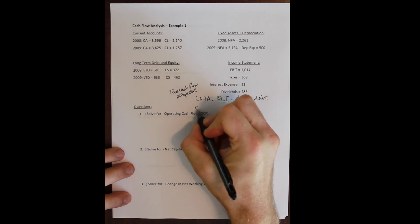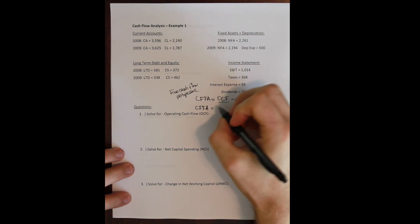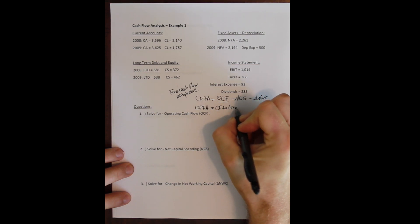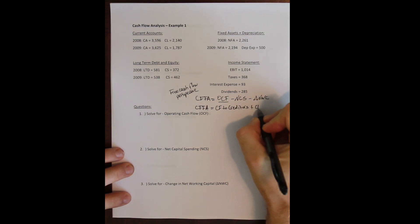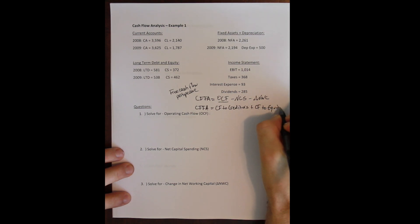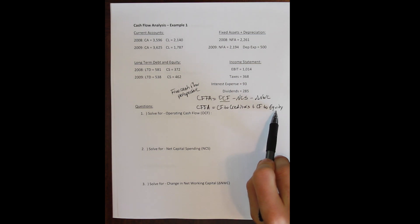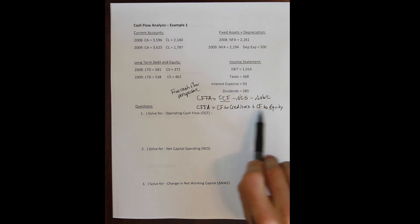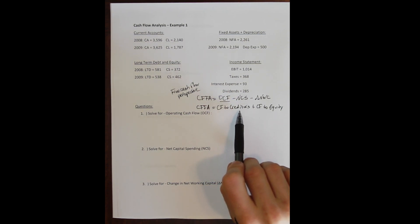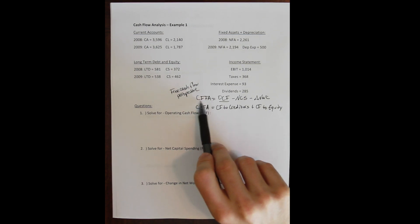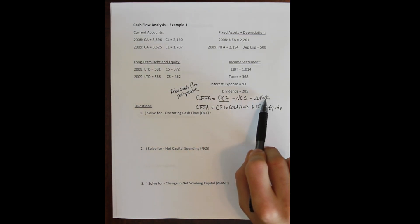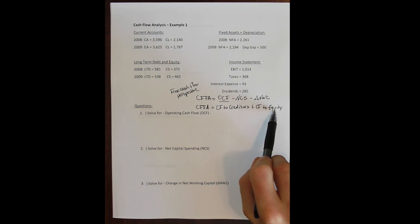The other side of the identity says cash flow from assets must also equal cash flow to creditors plus cash flow to equity holders — the two stakeholders in the firm. The firm raised its initial capital by borrowing from creditors or selling shares to equity holders, and any money left over from running the business needs to be paid back to them.